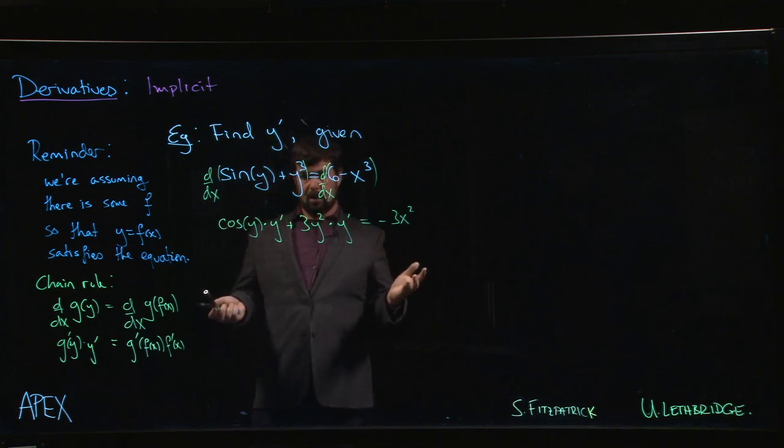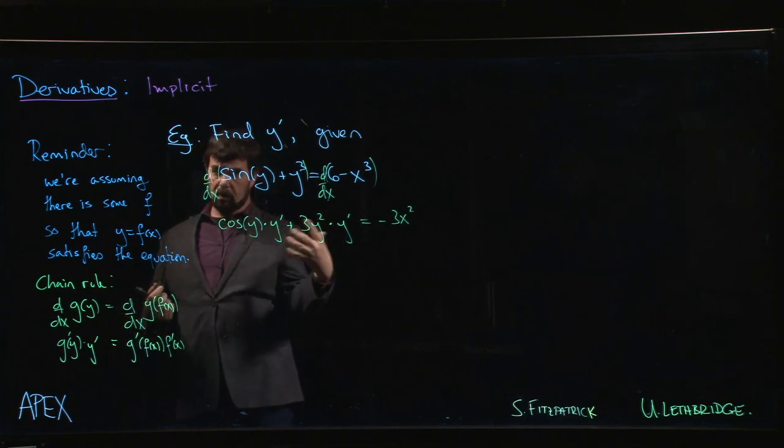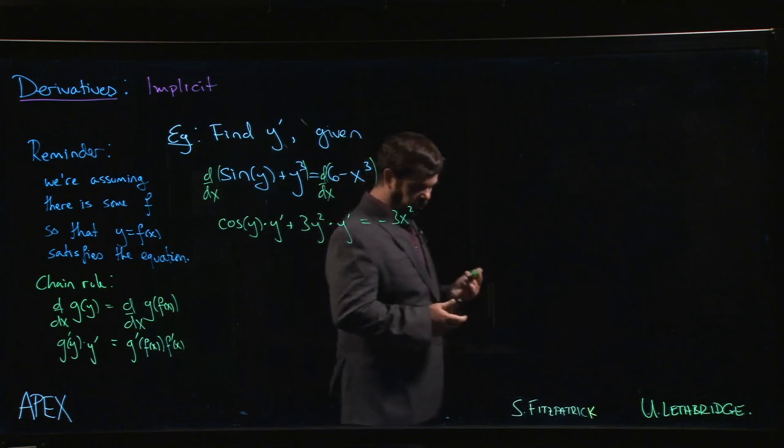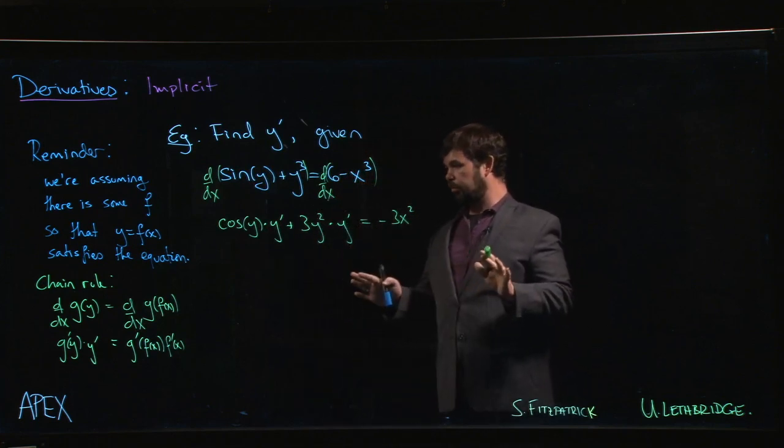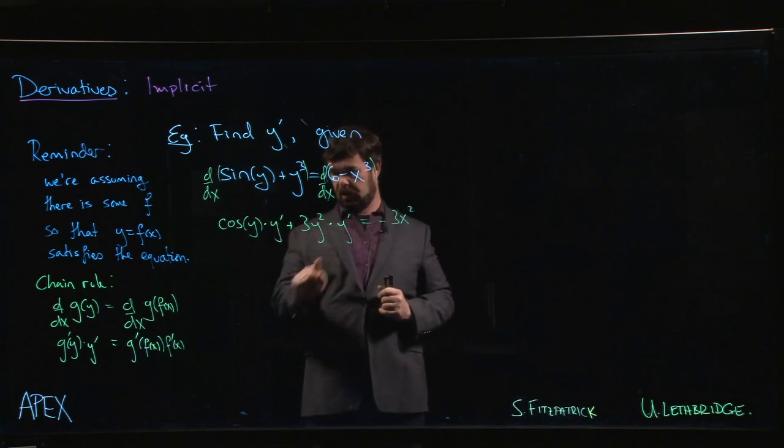Now, the next step is we want y prime, so we have to solve for it. And you'll see that there's more than one term that has y prime. Now, there's algebra involved, but the good news is that y prime is always going to show up alone, like this.